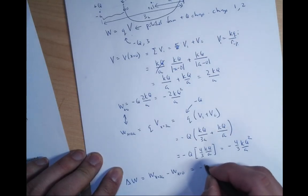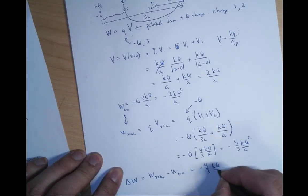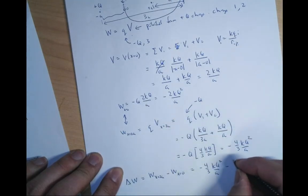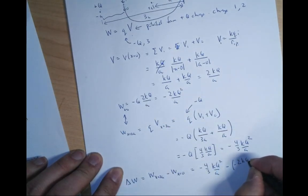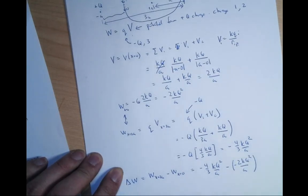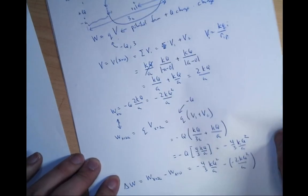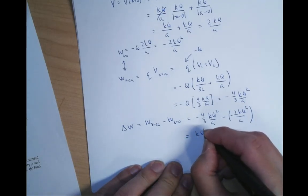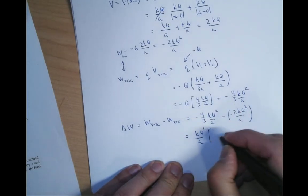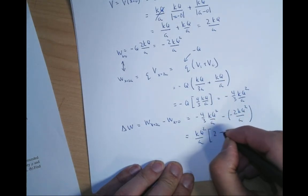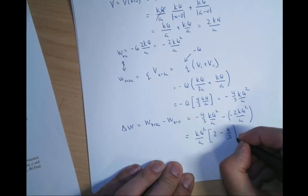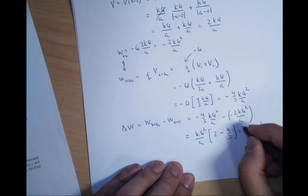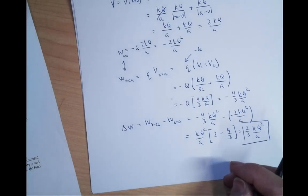The change in work is how I ended minus how I started: minus 4kq²/3a minus (minus 2kq²/a). Factoring out kq²/a gives (2 minus 4/3) = 2/3. So the change in work is 2kq²/3a over a — that's 2kq²/3a.